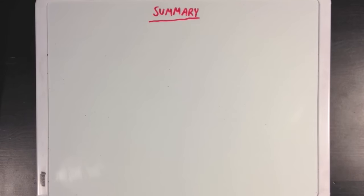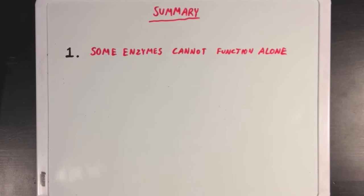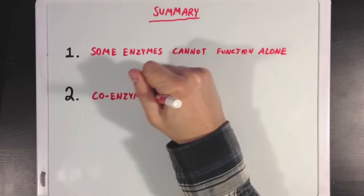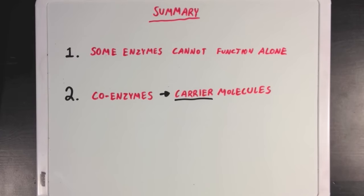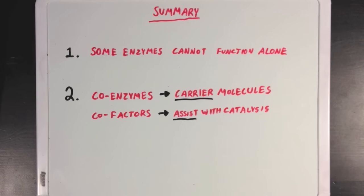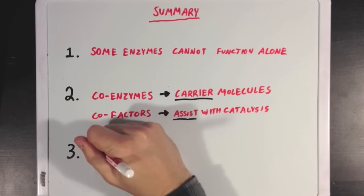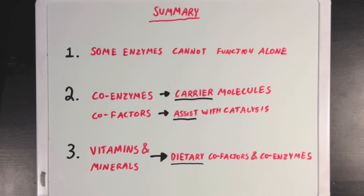So, what did we learn? Well, first we learned that not all enzymes are able to function alone, and some need a little help. And next we learned that this help can come from coenzymes, which usually act as carrier molecules, or cofactors, which directly assist with the catalysis that the enzyme is doing. And finally, we learned that vitamins and minerals generally refer to dietary cofactors and coenzymes.